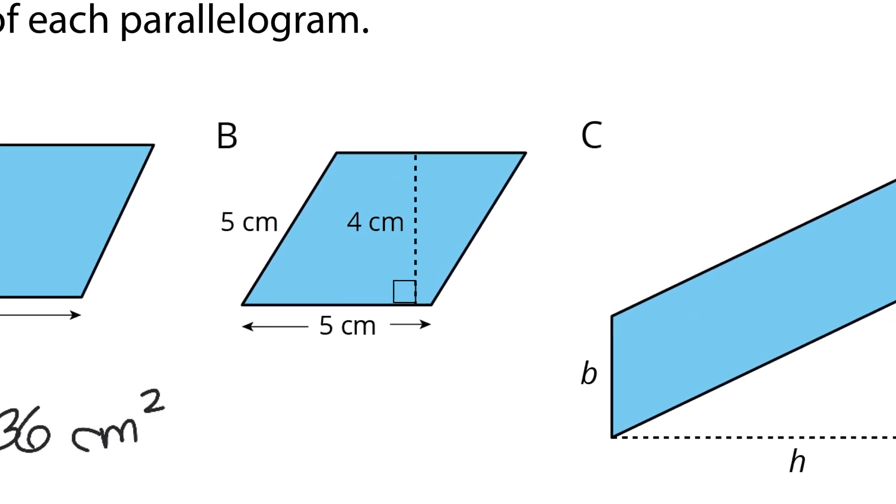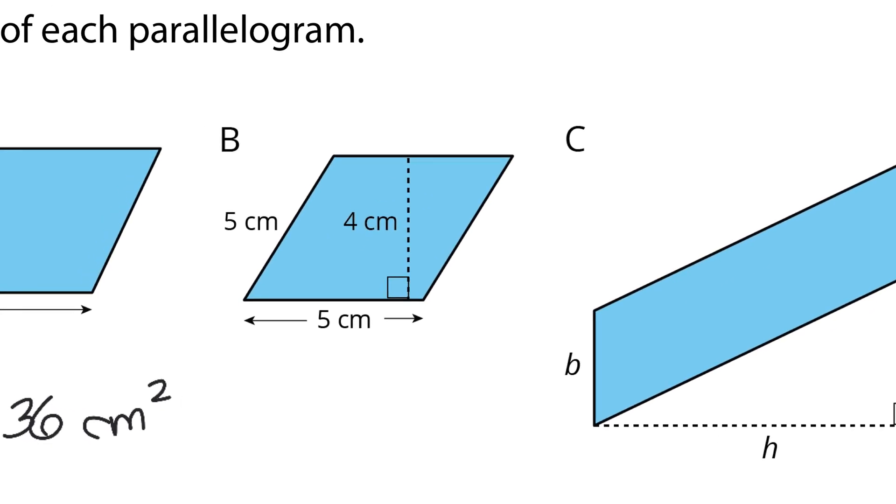In B. Our base and our height have to meet at a right angle. Let's call this length of 5 our base. Here's our right angle. Let's call that our height for 4. And so our area will equal 5 times 4, which is 20 square centimeters.